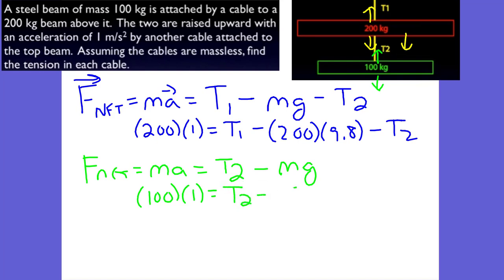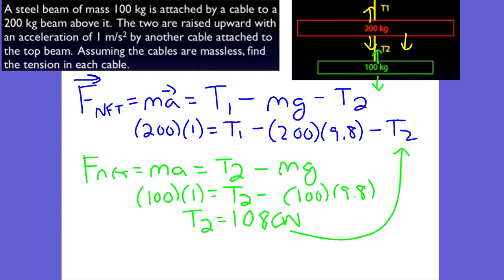We have T2 minus 100 times 9.8. We can figure out what T2 is by a little bit of algebra, and we find T2 is 1,080 newtons. What do we do with that T2? We bring it into the first equation and we're able to figure out what T1 is. T1 ends up becoming 3,240 newtons. You can see tension one is greater than tension two not simply because of the greater mass, but because it's being affected by T2 as well as its own weight.